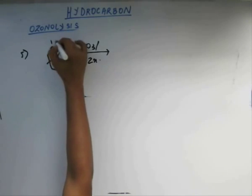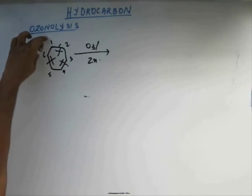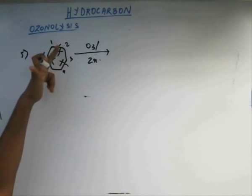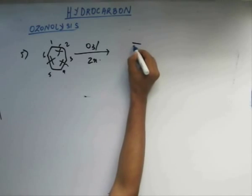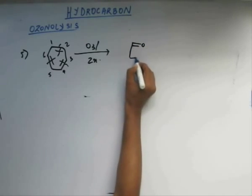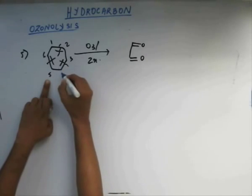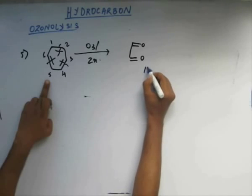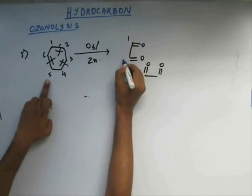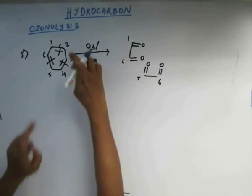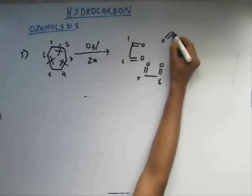From this part, let me number the carbons: 1, 2, 3, 4, 5, 6. Carbon number 1 and carbon number 6 are going to come out as one part because we are cleaving the pi bond from here and from here, so carbon number 1 and carbon number 6 are going to form C=O like this. Carbon number 4 and carbon number 5 are also going to come out and form C=O like this.